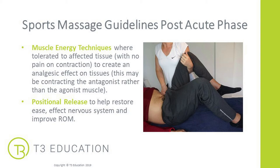Muscle energy techniques may be used on the affected tissue where tolerated and when there is zero pain on muscle contraction — no pain whatsoever. These create an analgesic effect on the tissue, reducing pain. You may need to contract the antagonist rather than the agonist muscle to get the desired response. Positional release techniques are a good way of restoring ease to the area — they affect the nervous system and can improve range of movement, applied to unaffected joints close to the injury site.